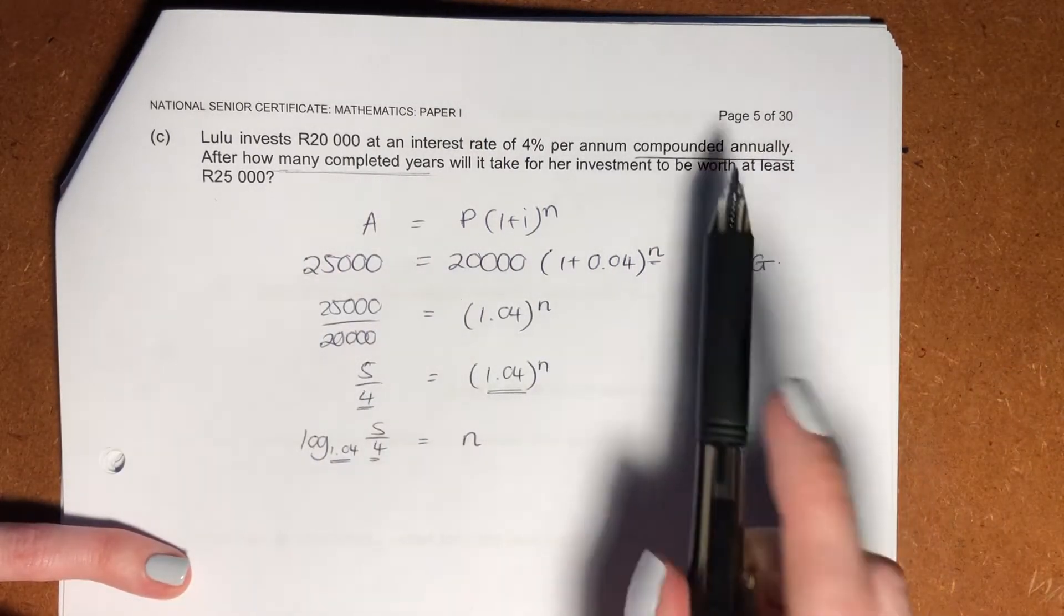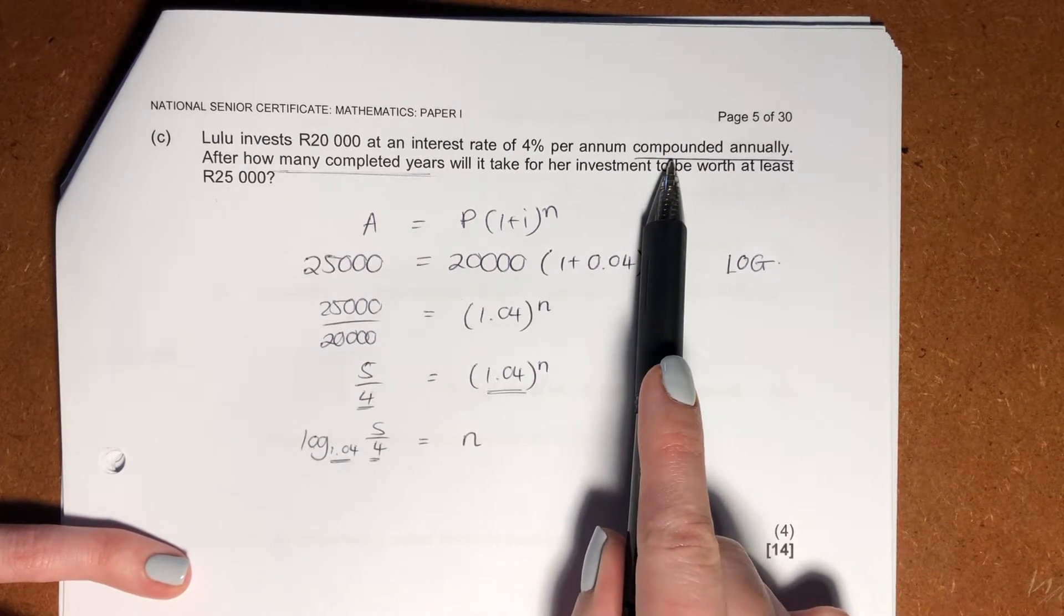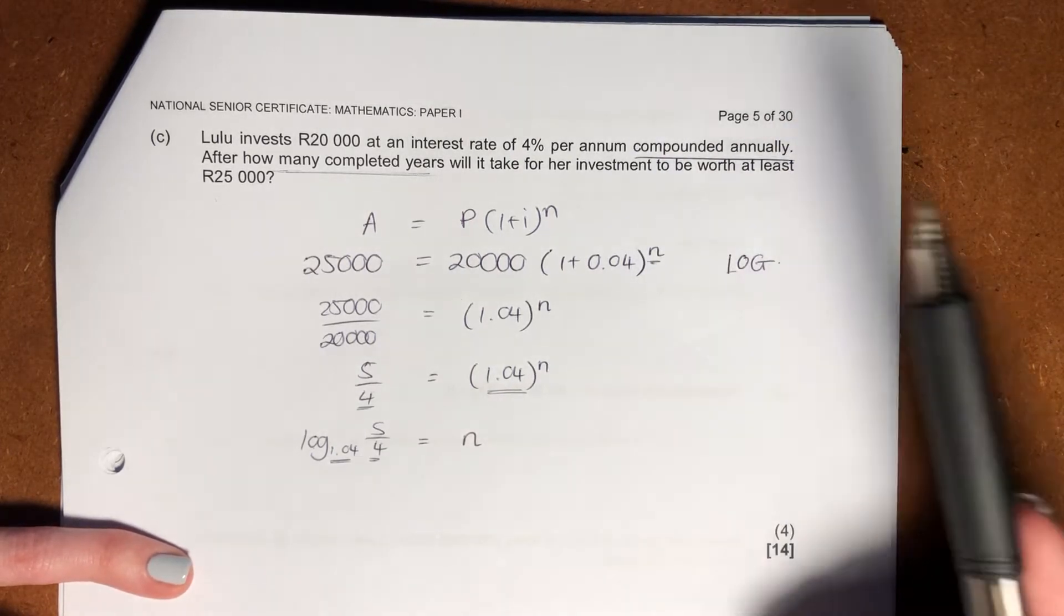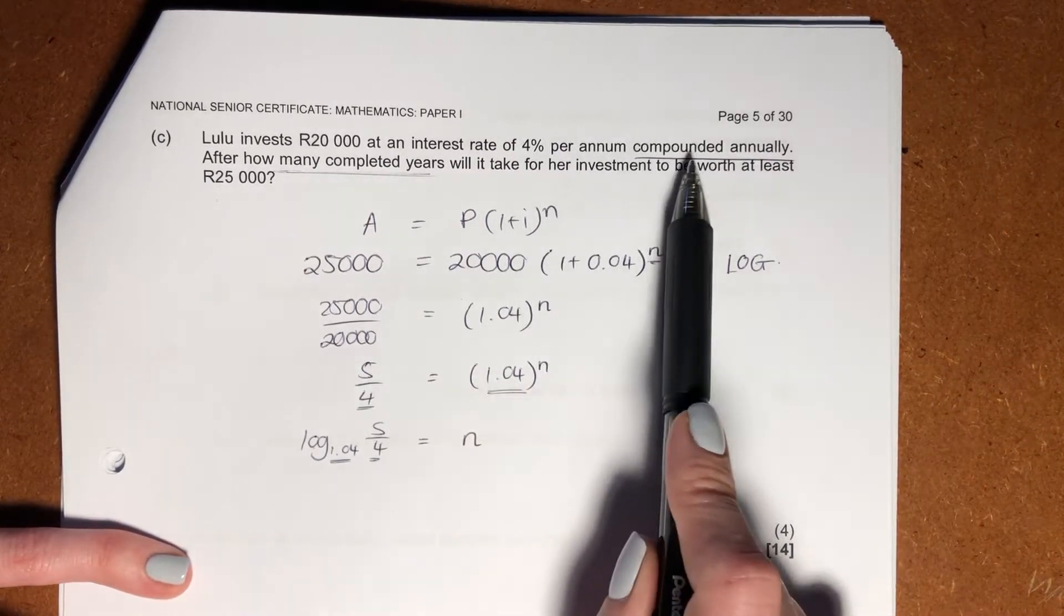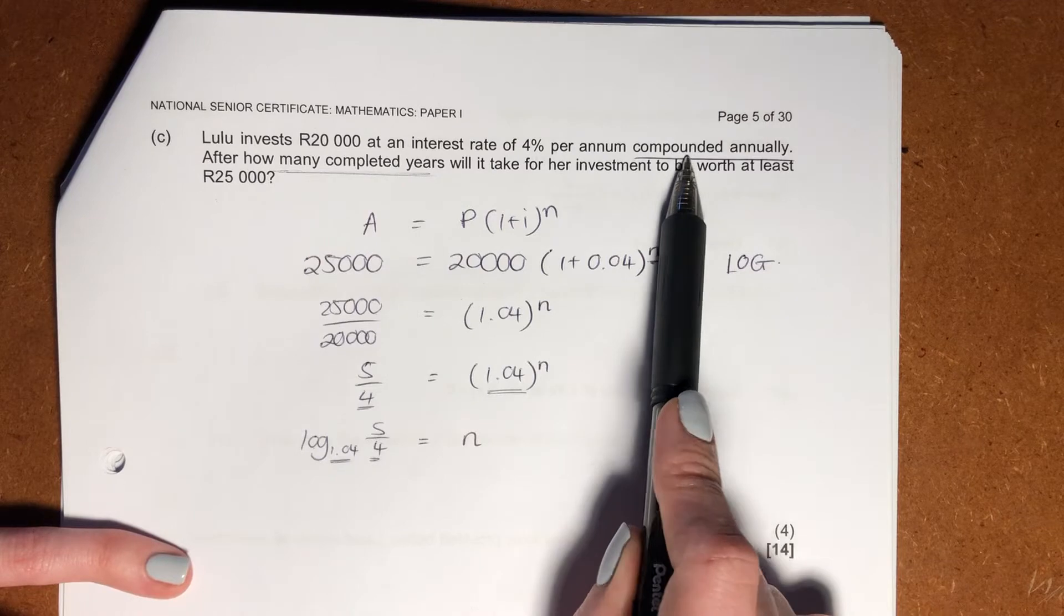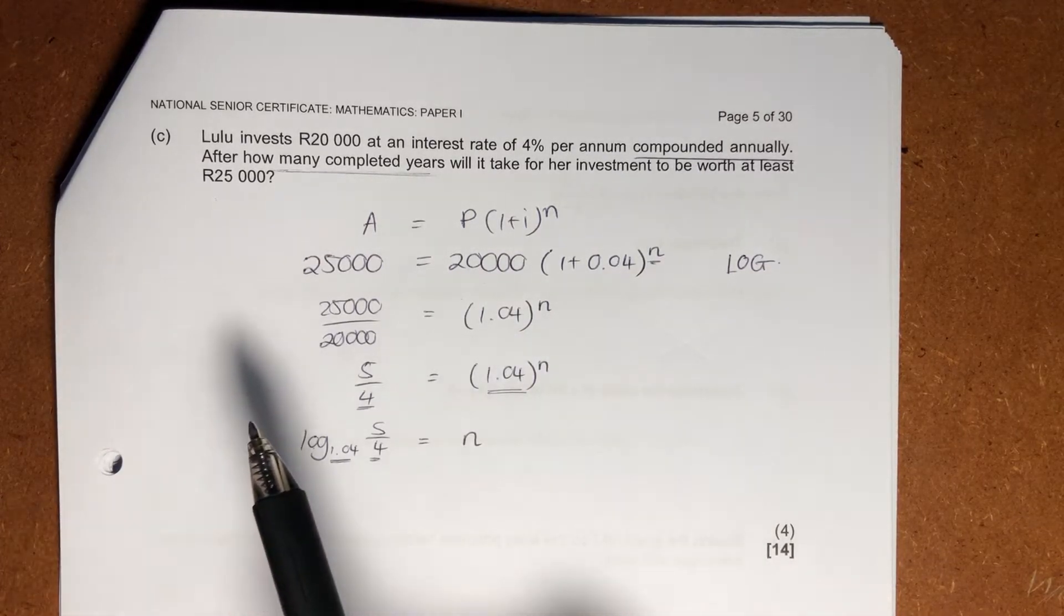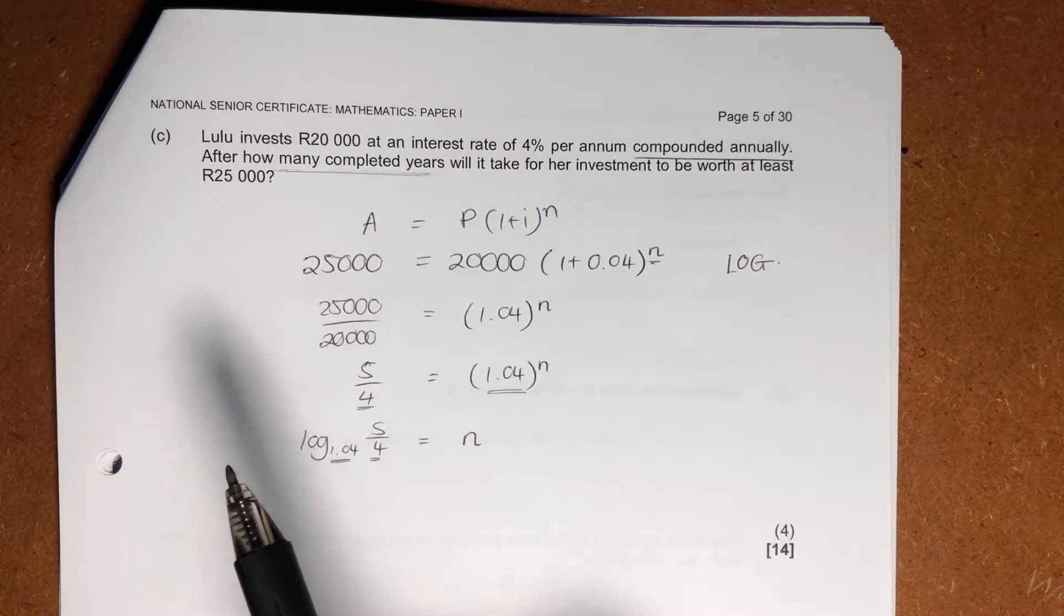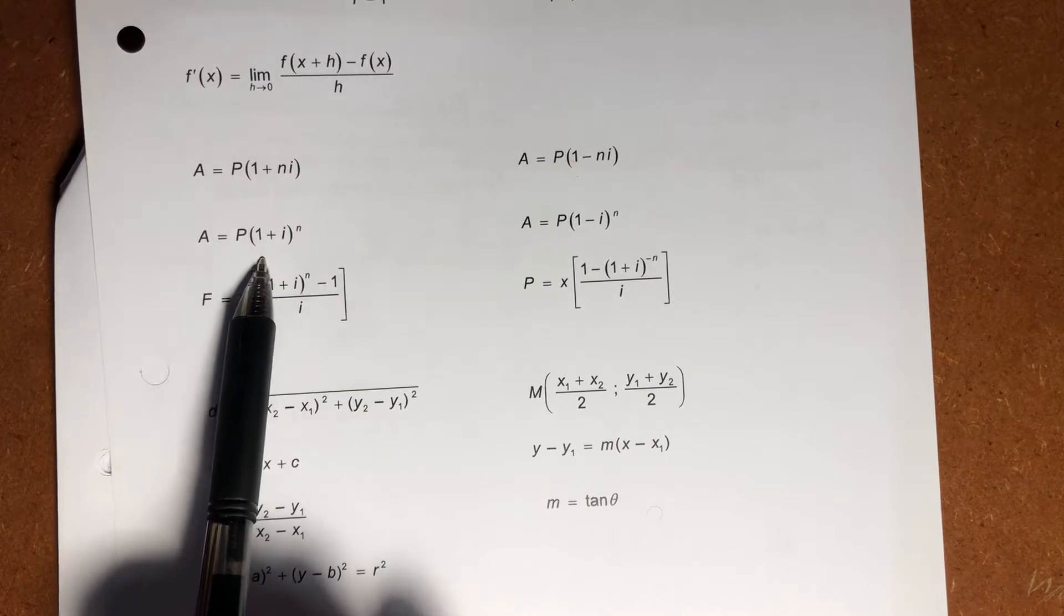So what I did is I said, okay, I see that it's compounded annually. That means that I'm dividing my interest rate by one. If you divide by one, it doesn't mean anything. So you can just leave it as my interest rate of 4%. Compounded annually, what does that indicate to me? I have to use the compound interest formula. You get it from the formula sheet. So there it is on the formula sheet, compound. This is simple.